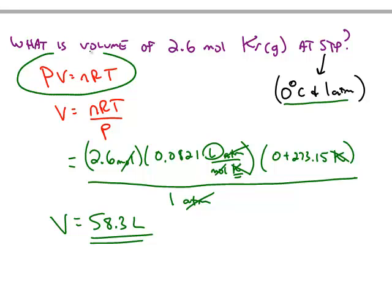With the same equation, there are four variables: P, V, n, and T. The only one that's not a variable is R. So any use of this equation could be: you know three out of the four variables, solve for the fourth one.